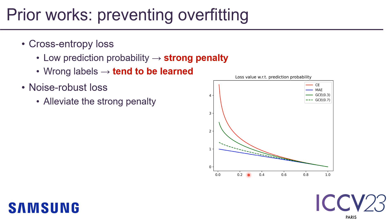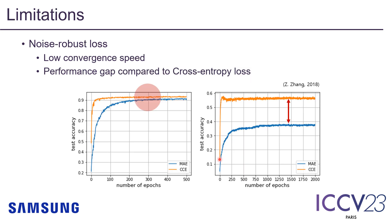There are various recent methods to resolve this problem, but in this presentation we only deal with loss-based methods. They alleviate the strong penalty, as you can see in the graph. Unfortunately, this alleviation also affects learning the correct labels. These methods have been reported as having low convergence speed and poor performance.